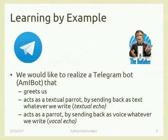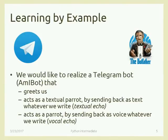Today we'll try to create something that uses two different libraries in Python — we will build a simple Telegram bot. We want this bot to perform three operations. First, greet us: when we connect, it will say 'hi'. Second, act as a textual parrot — an echo operation where we write something and the bot replies with the same text. Third, act as a voice parrot: we write something and the bot replies with the same thing as a voice message, not a text message.